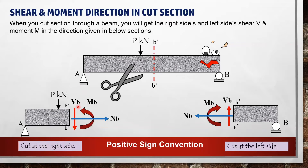The internal forces — shear force V, moment M, and axial force — at the right side of the cut section must have the same magnitude as the left side. The arrow directions show the positive sign convention for these forces.